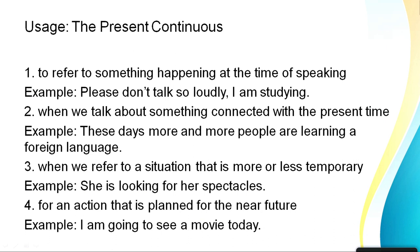Now we move to present continuous tense. It describes an action that is already going on. For example, 'Please don't talk so loudly, I am studying' — at the moment of speaking, the action of studying is going on. The ING form is the easiest way to identify a continuous tense sentence. If an action is continuing, we use the ING form — these two are inseparable when talking about present continuous.